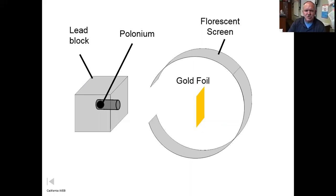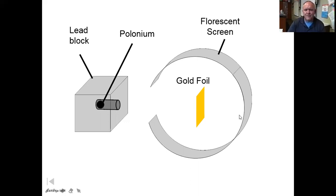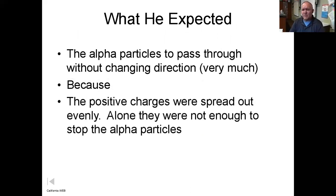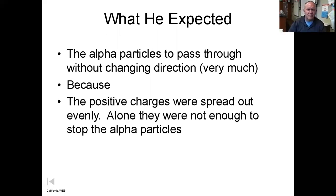Polonium is an element that shoots off alpha particles, so they shot alpha particles through a tiny layer of gold foil. Think of it like shooting a big shotgun shell through a piece of Kleenex — you would expect it to go right through. We expected the alpha particles to pass straight through without changing direction, because in the plum pudding model that positive charge is spread out over so much area that it's not very dense — kind of spongy, like foam. It shouldn't be able to stop an alpha particle.